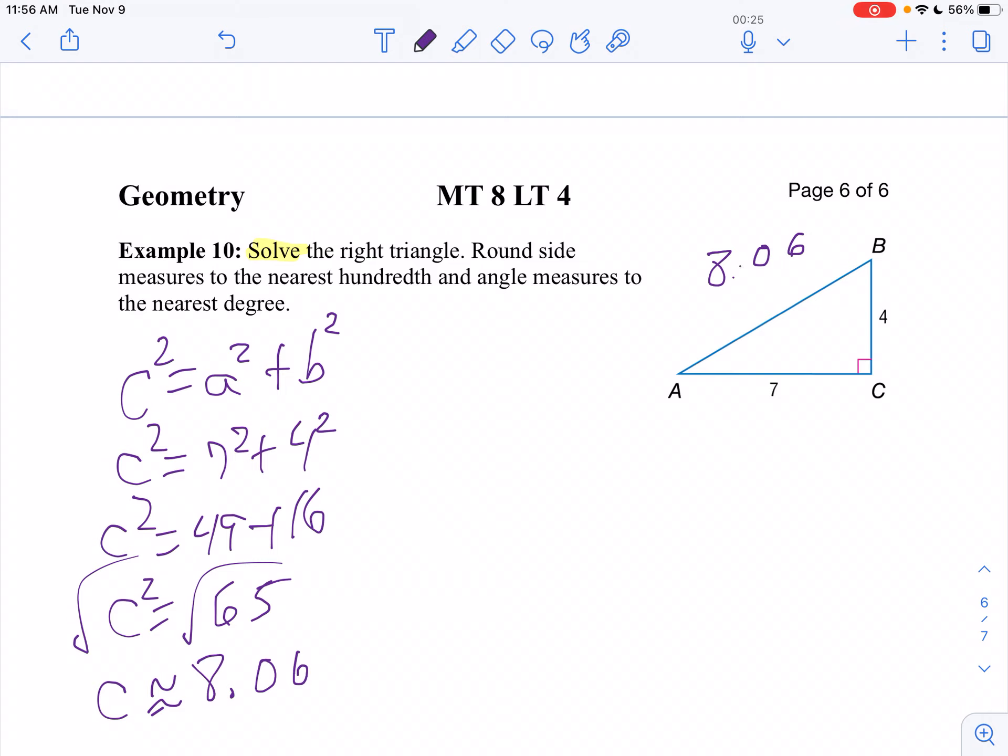Now to find the angle measures, I'm going to use my trig ratios. And the nice thing is I have all three sides. I can use any of my ratios. I think I'm going to use the two sides I'm given. I'm not going to use 8.06. So I'm going to look at 4 and 7. In relation to angle A, 4 is opposite, 7 is adjacent.